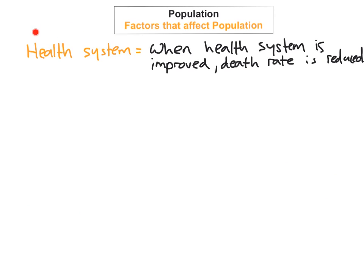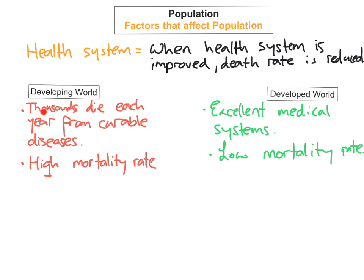The fourth factor that affects population is the health system. When the health system in a country is improved, there is a decrease in the death rate. If the health system is weakened, then there's an increase in the death rate. In developing worlds, because of a poorer health system, thousands die each year from curable diseases such as colds, malaria, measles, and diarrhea, giving those countries a high mortality rate. However, in developed countries they have excellent medical systems, and because their health systems are so good, there is a lower mortality rate.